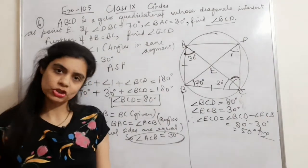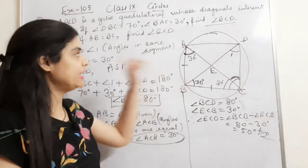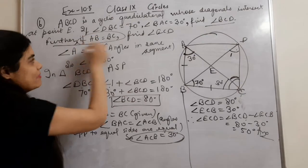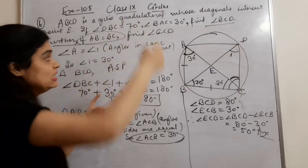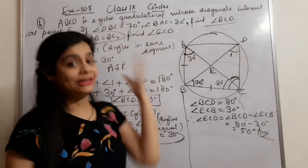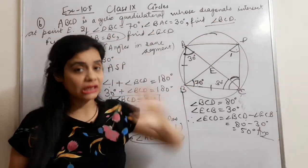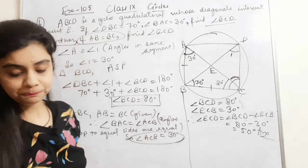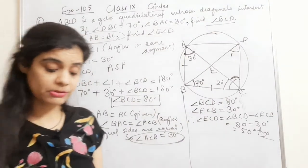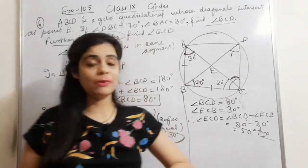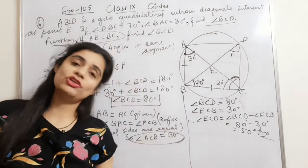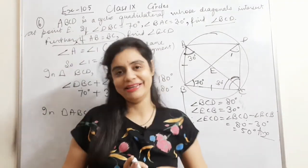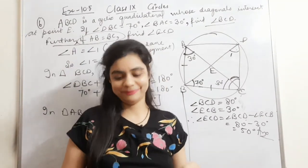It's done. But note that the part where AB equals BC is not used in the first part. These were question numbers 5 and 6, and the next questions I will explain in our next video. Do watch my next video. Thank you so much, bye-bye.